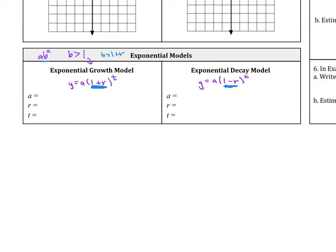Same thing over here. Remember with the decay, we know that the b value is between 0 and 1. So notice that's why we're subtracting 1 here. So again, in this case, b equals 1 minus r.